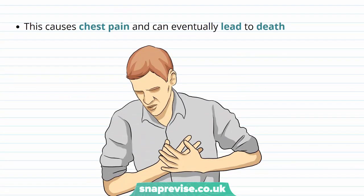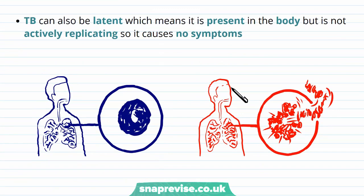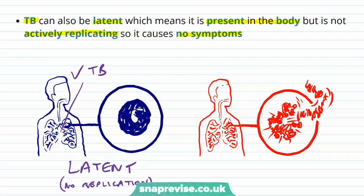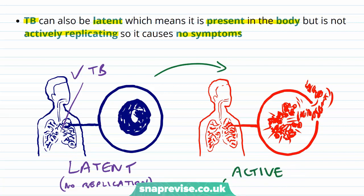The granulomas can cause a lot of problems, for example chest pain, and eventually they can lead to death. TB itself can also be latent, meaning it's present in the body but not actively replicating, so it doesn't cause any symptoms. If someone has TB in their lungs in a latent phase, it's not replicating and so the symptoms are not developing because the lung tissue is not breaking down. However, it can quickly change from latent to active, whereby it starts replicating, the lung tissue starts to break down, causing damage and symptoms.